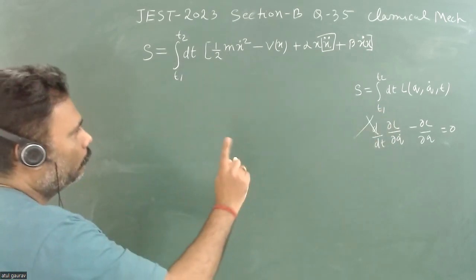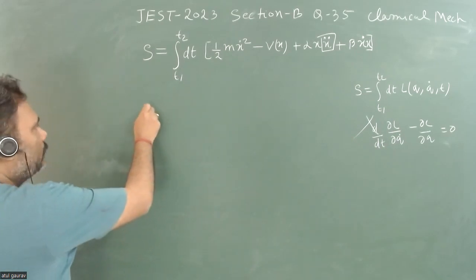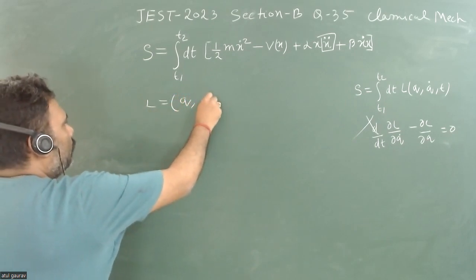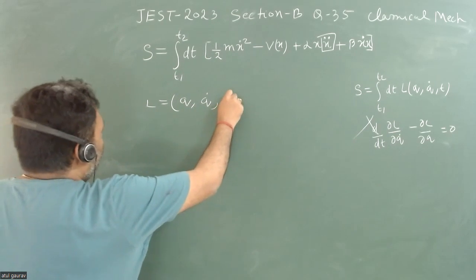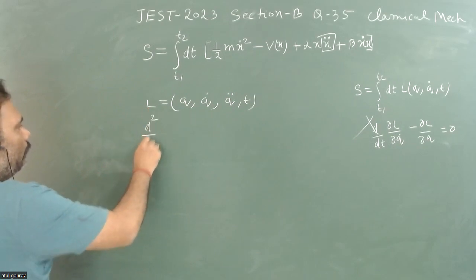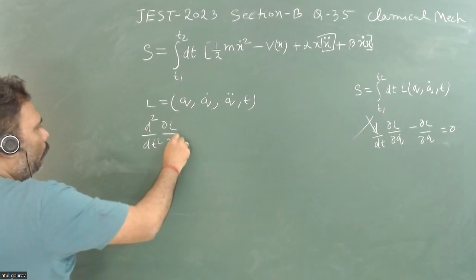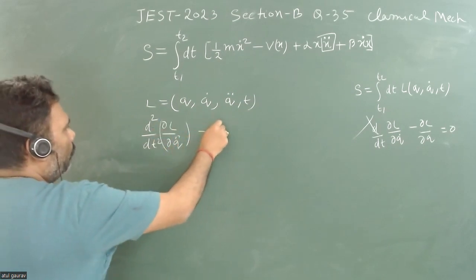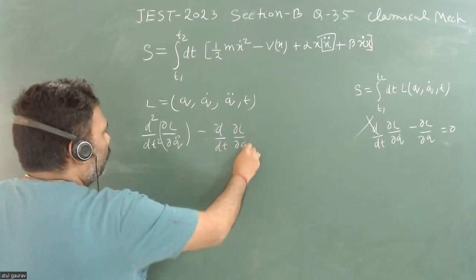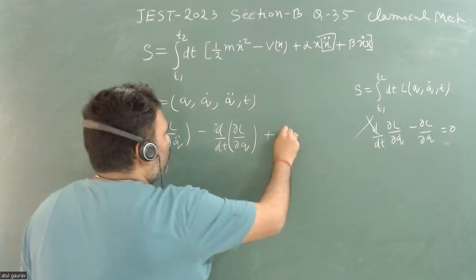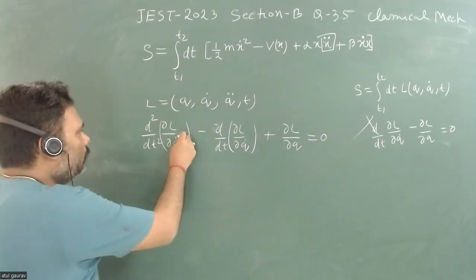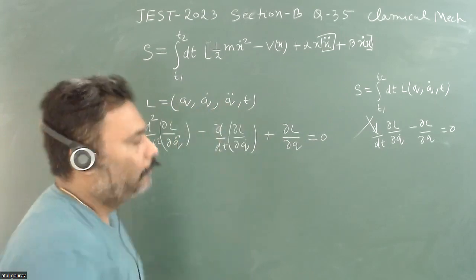So what will be the new equation? You have to be careful — when L is a function of generalized coordinate, q-dot, and q-double-dot, and possibly time, the equation of motion becomes: d²/dt² (∂L/∂q-double-dot) minus d/dt (∂L/∂q-dot) plus ∂L/∂q equals zero.